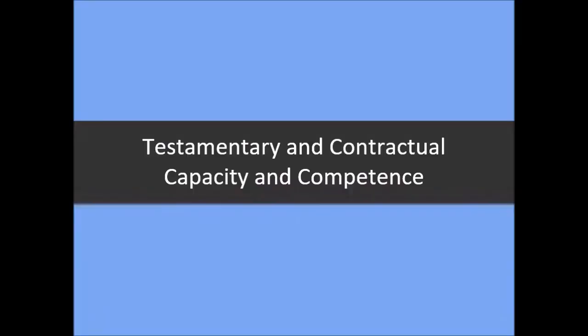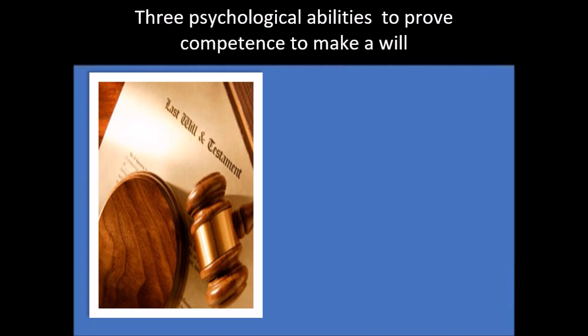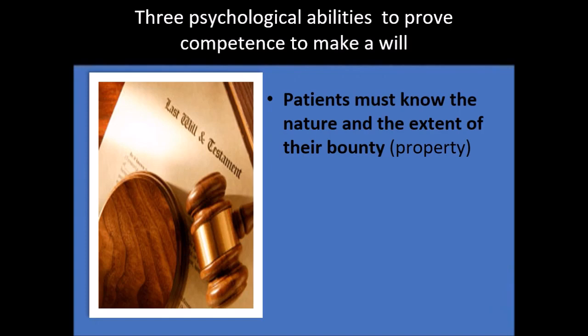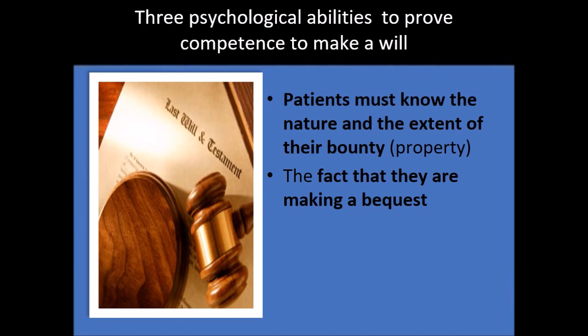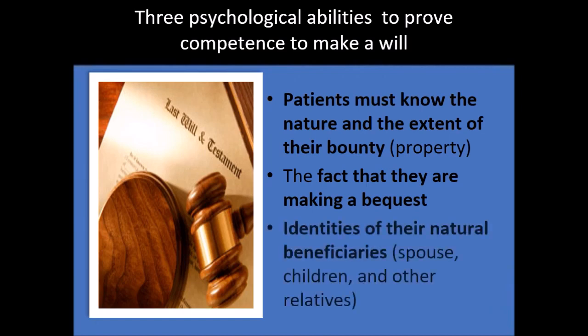Moving on to testamentary and contractual capacity and competence: there are three psychological abilities that need to be proven so that a person is competent to make a will. First, the patient must know the nature and extent of their property or bounty. Second, the patient must know that he or she is making a bequest or handing over property. Third, the person must know the identities of whoever is the natural beneficiary — meaning the spouse, children, and other relatives.